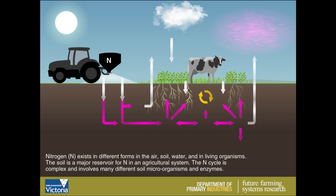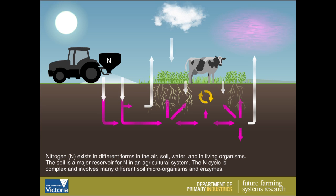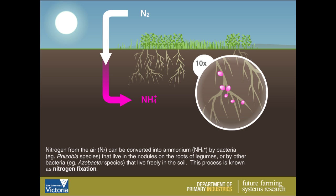The nitrogen cycle is complex and involves many different soil microorganisms and enzymes. Nitrogen from the air can be converted into ammonium by bacteria that live in the nodules on the roots of legumes, or by other bacteria that live freely in the soil. This process is known as nitrogen fixation.